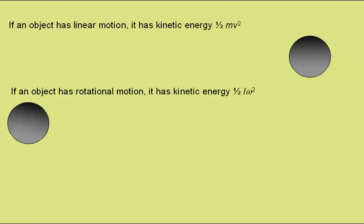If an object has rotational motion, it has kinetic energy half i omega squared, where i is the moment of inertia and omega the angular velocity.